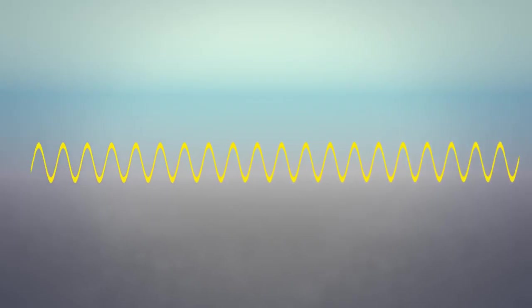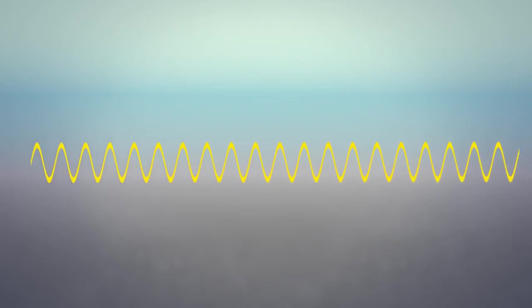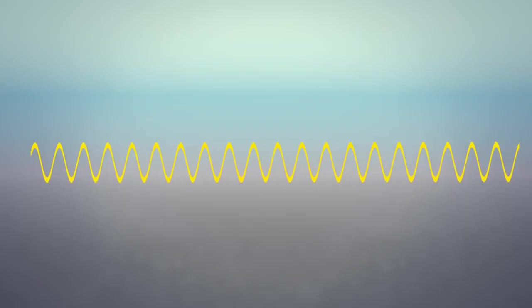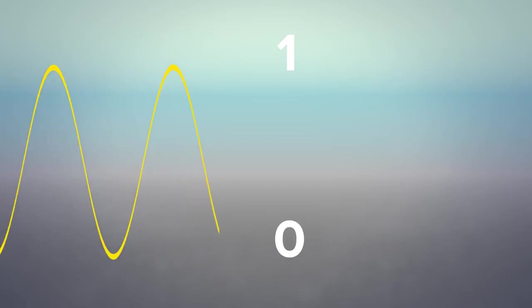A pure sine wave, for instance, is the extreme narrowband signal. But the problem with a pure sine wave is that it carries very little information — in fact, it carries one bit of information. One sine wave is either on or off, so this is a one-bit signal.